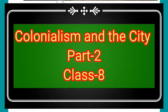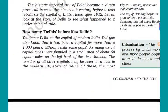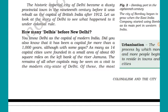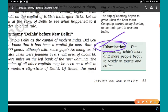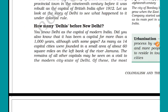Let's start the second part of colonialism and the city with the topic: how many Delhis before New Delhi? We were studying about the emergence of New Delhi. First, we'll study what kind of cities and areas existed before the making of New Delhi. Urbanization means the process of setting up of cities, by which more and more people begin to reside in towns and cities — so expansion of cities is known as urbanization.